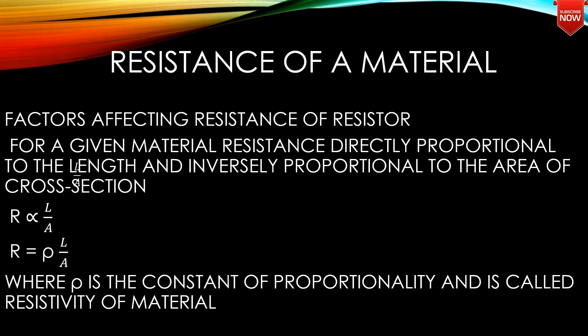Factors affecting the resistance of a resistor: For a given material, resistance is directly proportional to the length and inversely proportional to the area of cross-section. R is proportional to L over A, so R is equal to rho times L over A.